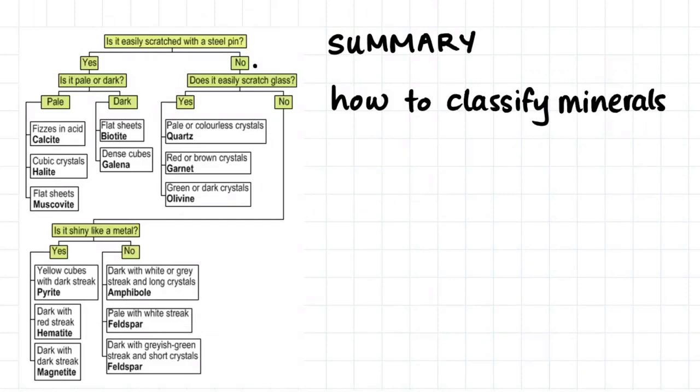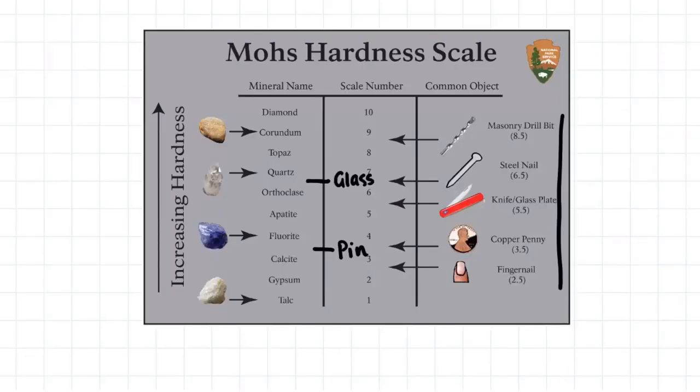And finally, here is a quick summary to see if we can decide what sort of mineral we are looking at in the lab. Firstly, we will ask ourselves, does the mineral get easily scratched by a pin? When we are looking at this question, we are actually considering the hardness of the mineral. So here we can say that all of these minerals are less hard than the pin.